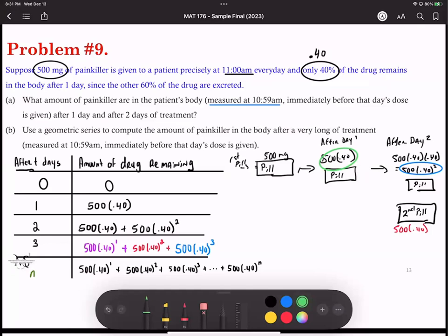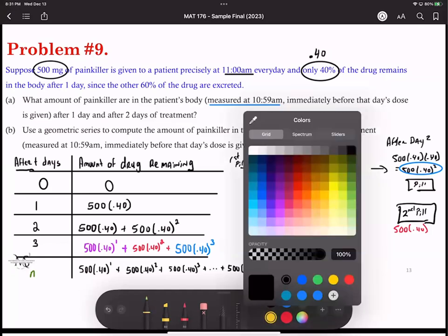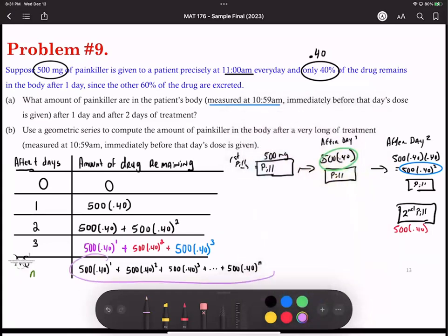And what this basically gives us, this n days, this pretty much gives us now our series that gives us the series because now you can identify what's your a and what's your r. Part b says use a geometric series to compute the amount of painkiller in the body after a very long time of treatment.